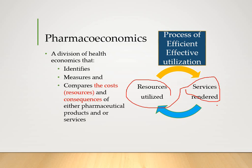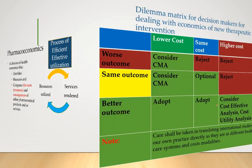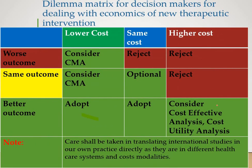Now what is important is the dilemma matrix for pharmacy and clinical pharmacology students. This is very important because sometimes we have to decide on a therapy, and once we compare one mode of therapy with another, this decision matrix will help you decide.